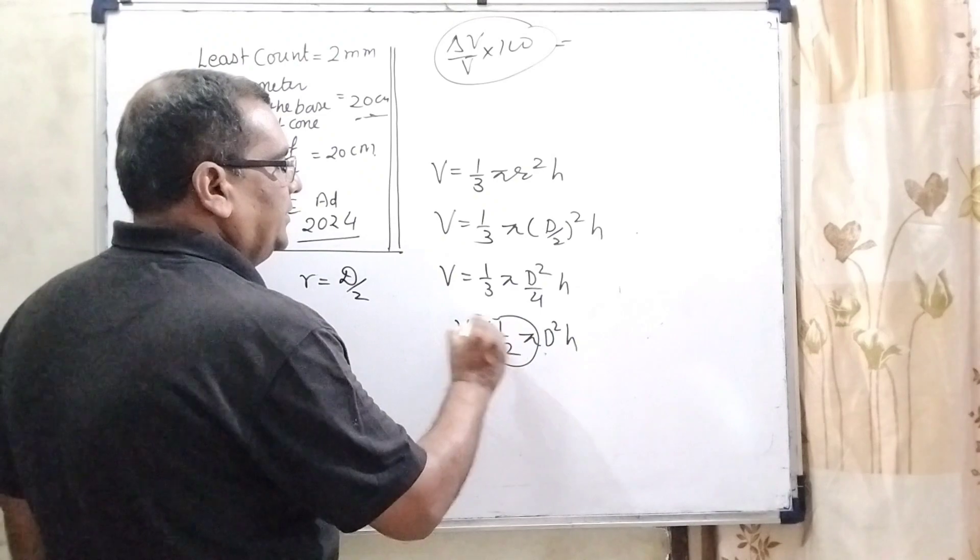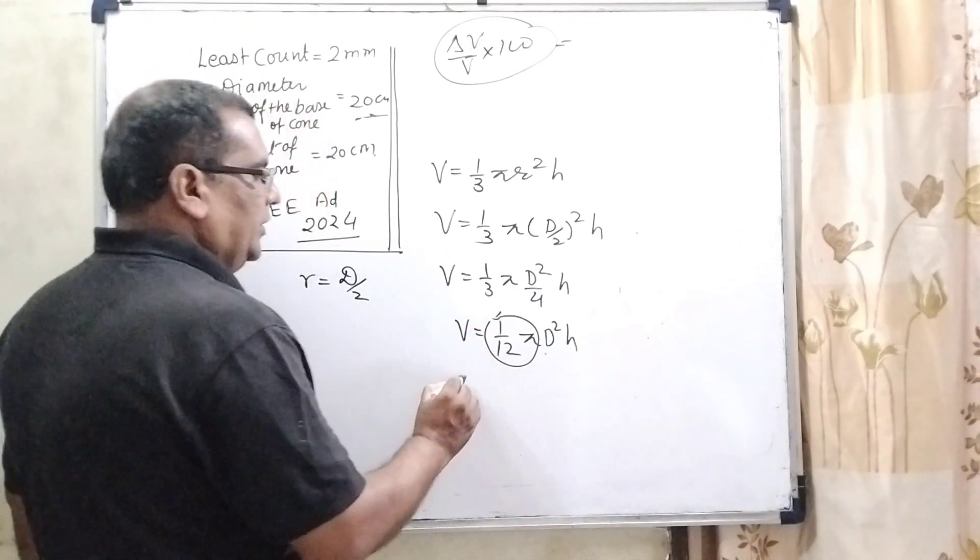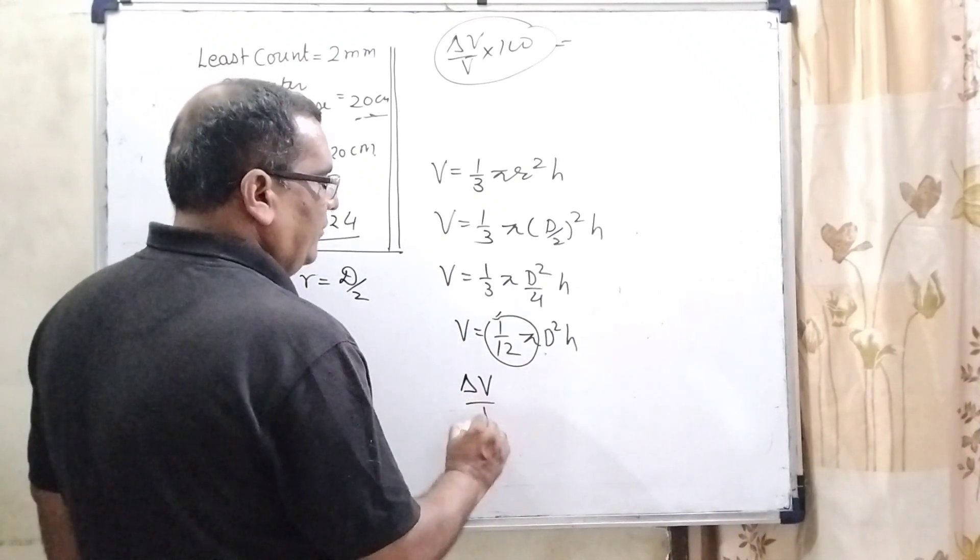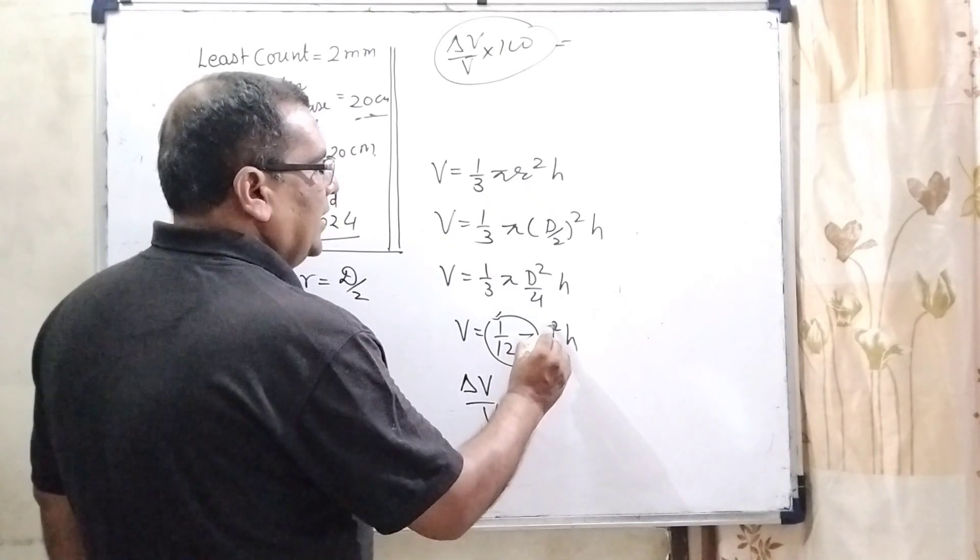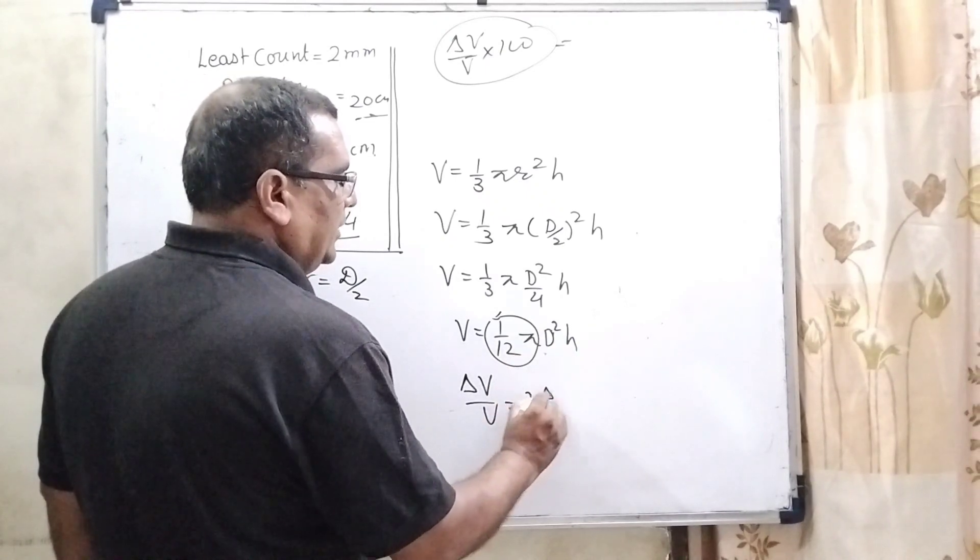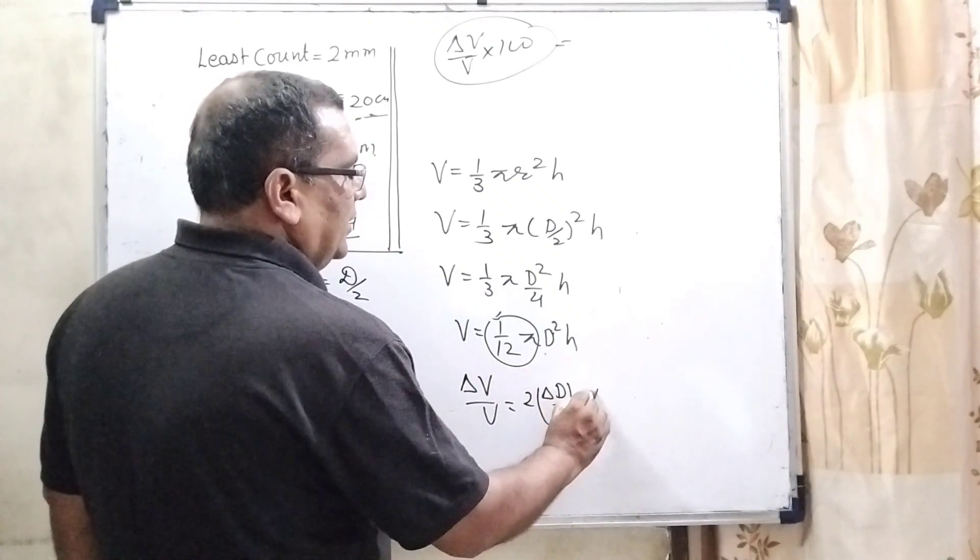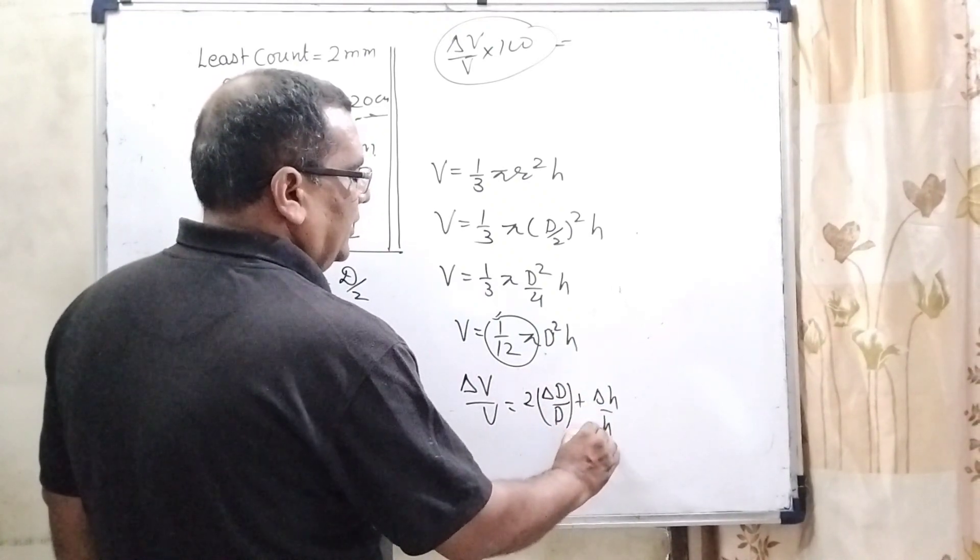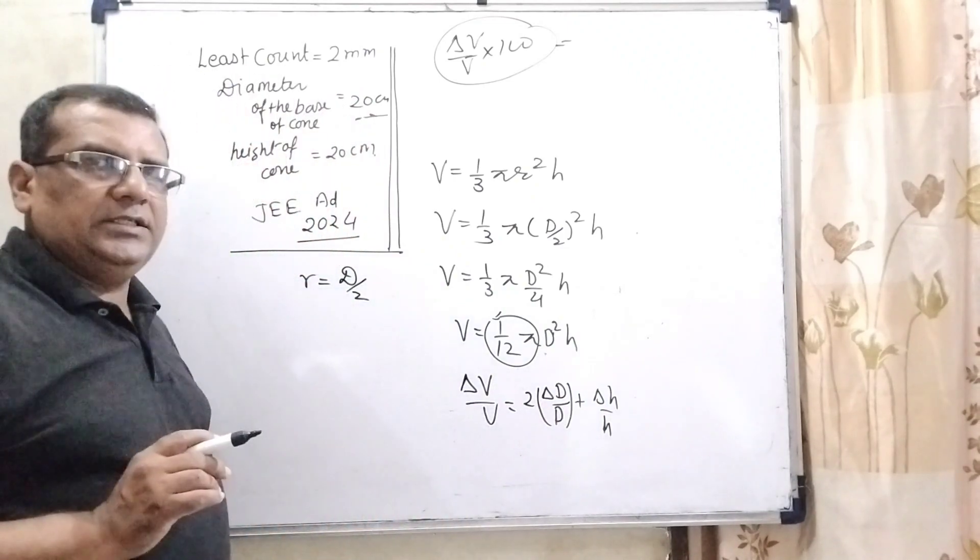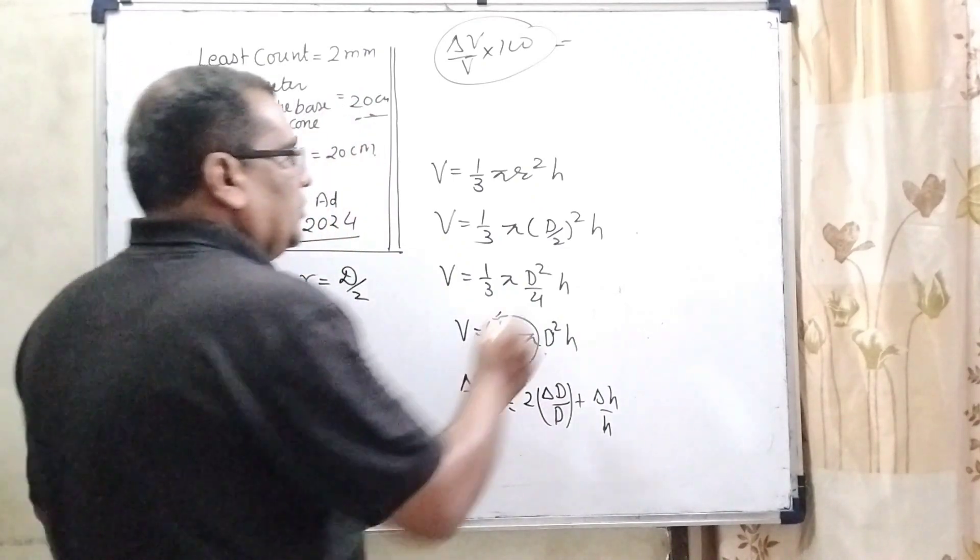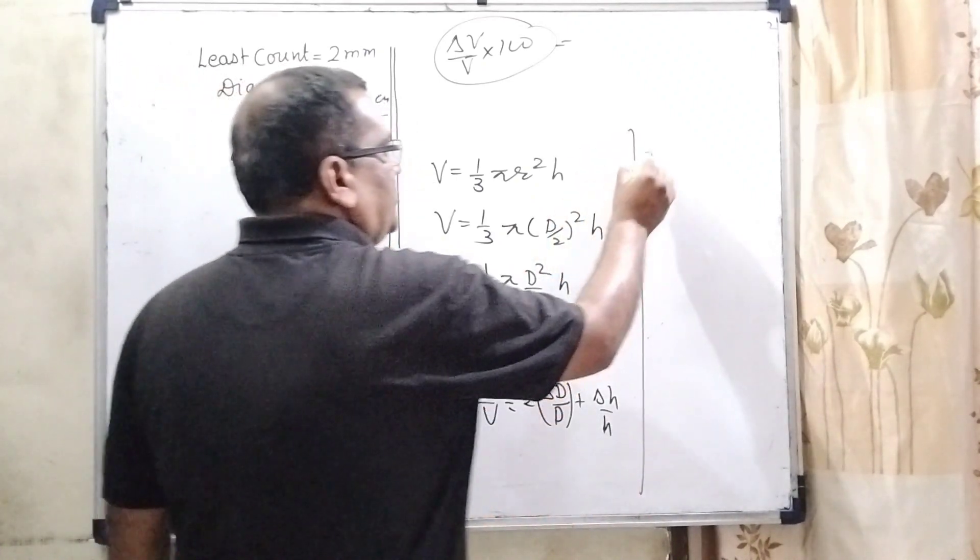This value is constant, means coefficient. So it can be written as delta V by V. Then this is the exponent, so 2 into delta d by d plus delta h on h. Delta h means least count. So now substitute the value.